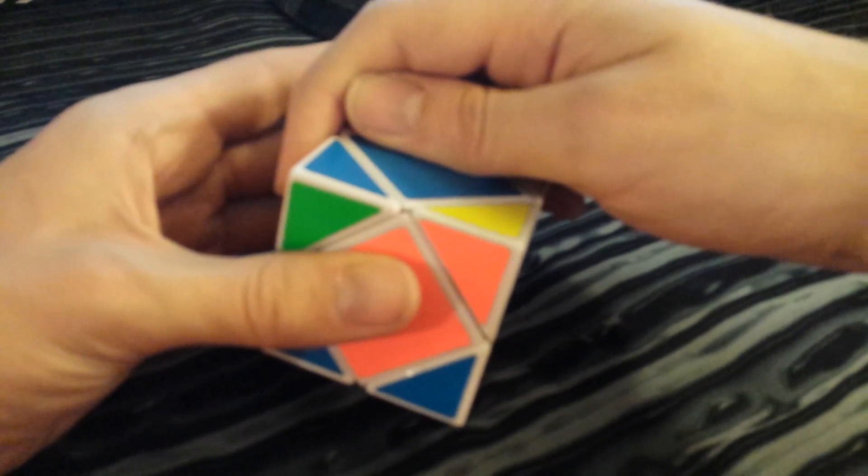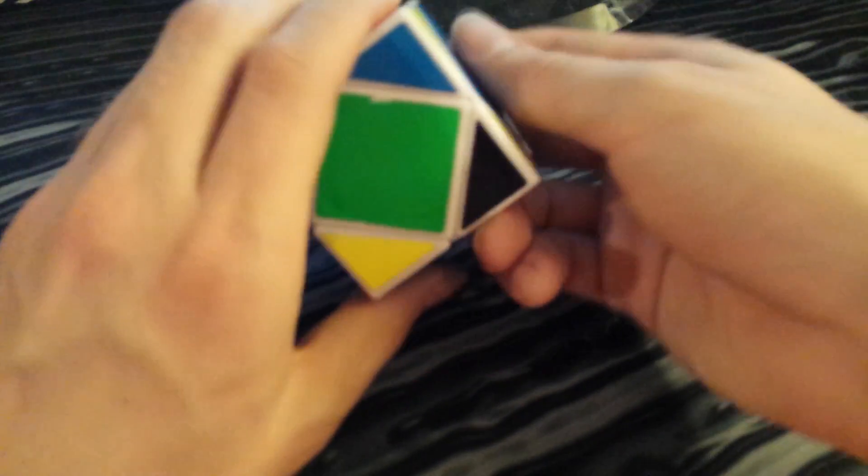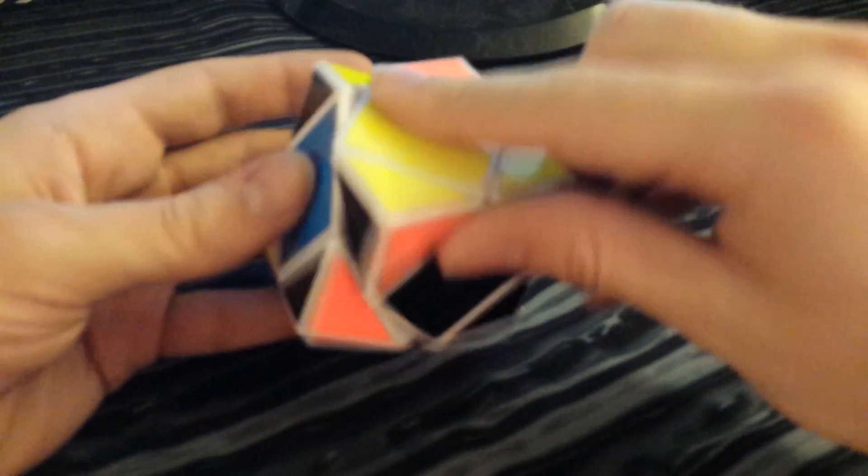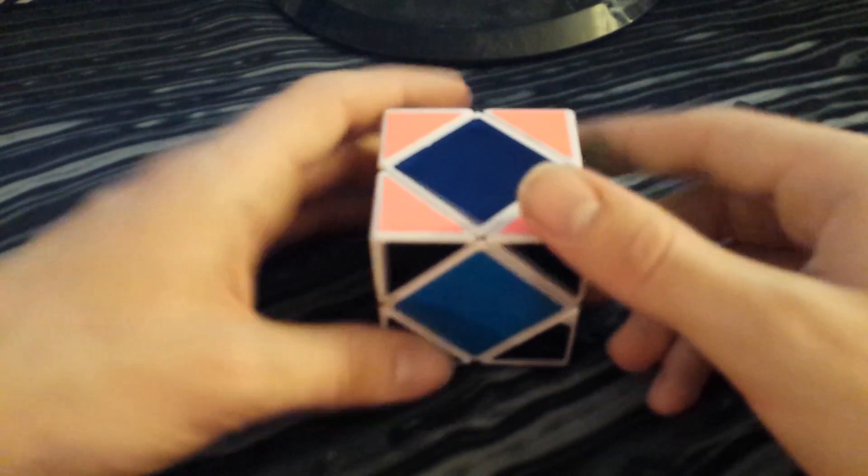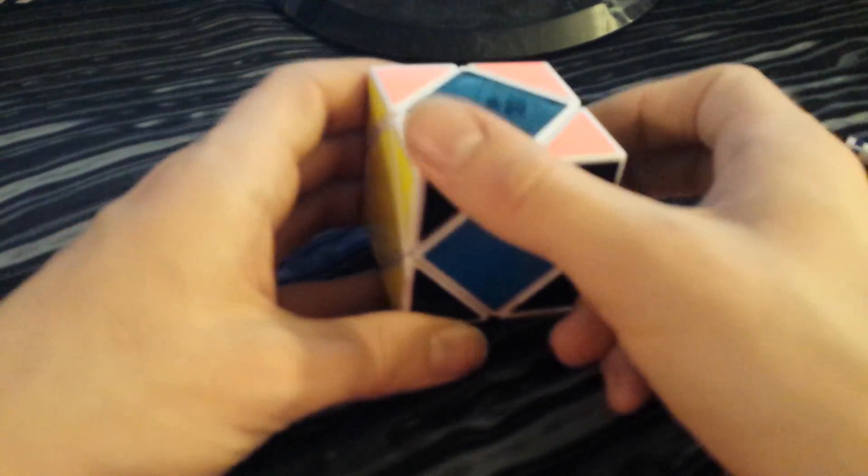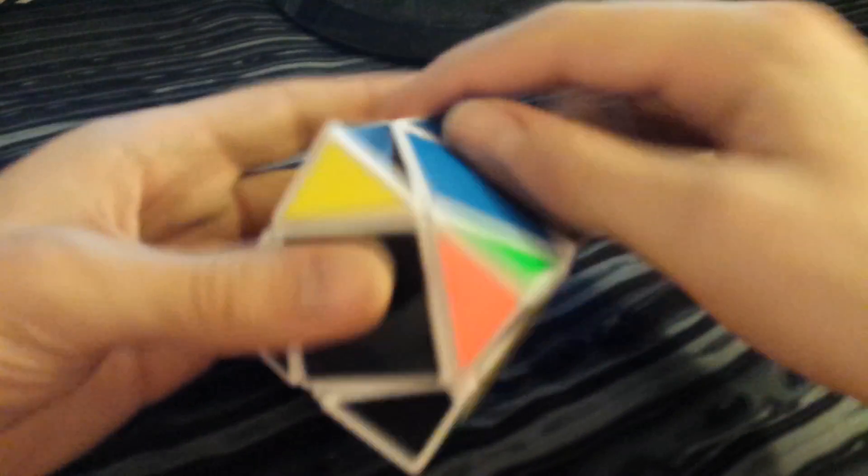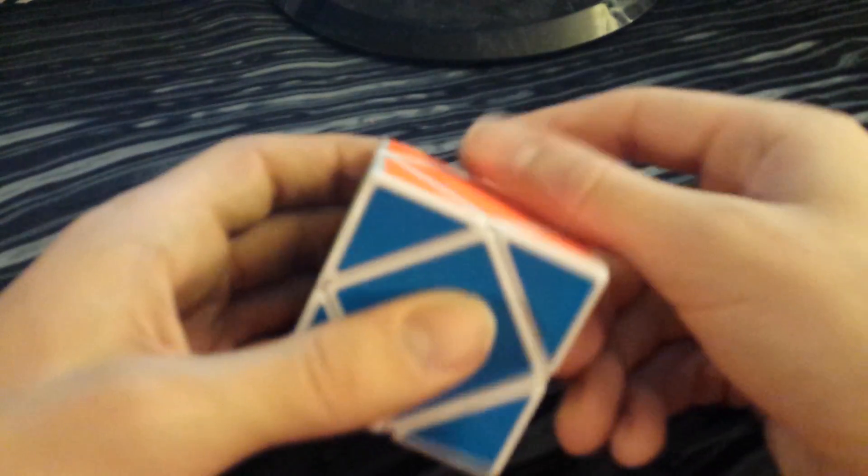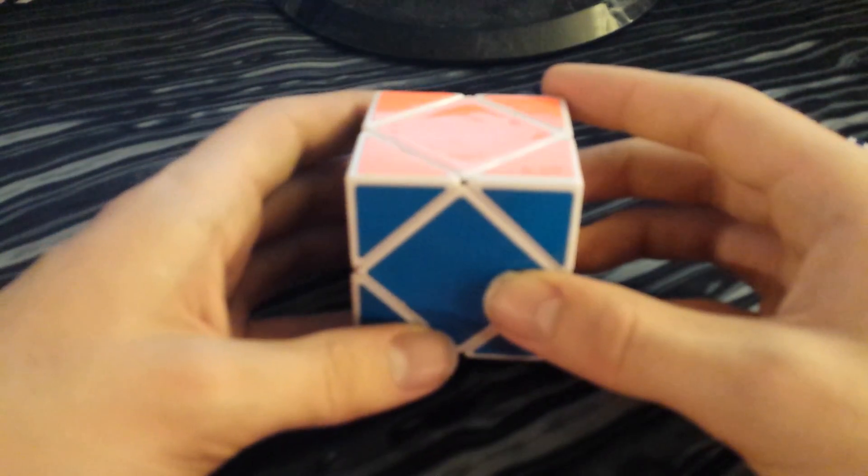You'll notice that when it comes up, my hand already is on the back here, which will become the right corner when I do a U2. So as I'm doing this turn, it sets up very nicely.